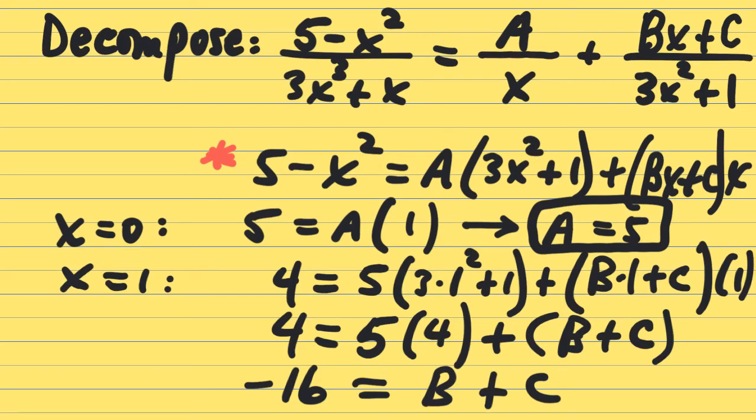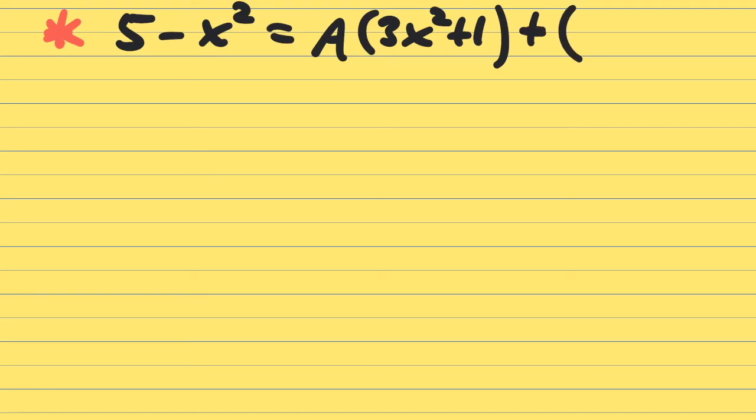Now because we don't have a unique value, we've got to try one more value of x, and I'm going to rewrite the equation with the red asterisk by it, and then we'll try a number like negative one subbed in, and we may end up having to solve a system of equations.